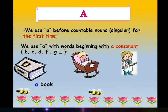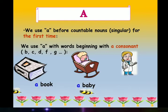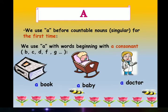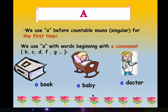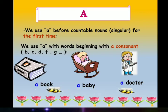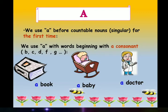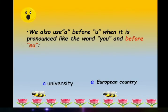So we will write here: a book, a baby. Next, doctor. We will write a doctor, because these are all countable nouns and they are singular. They are also starting with the consonant sounds B and D. So we use A article.